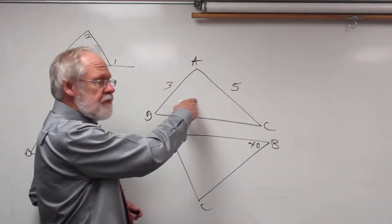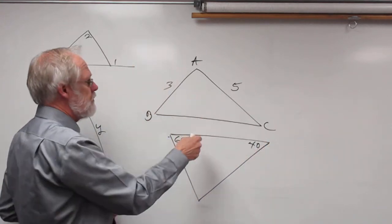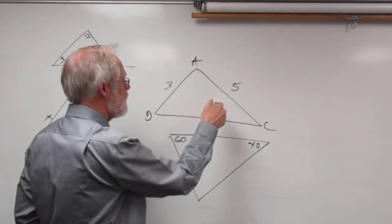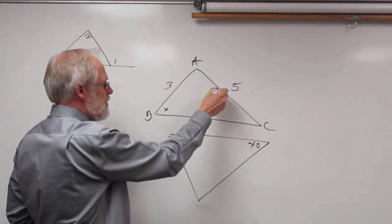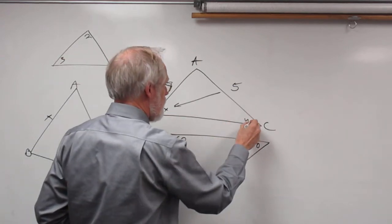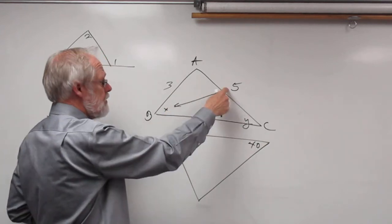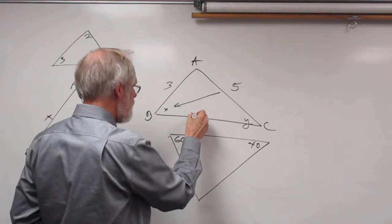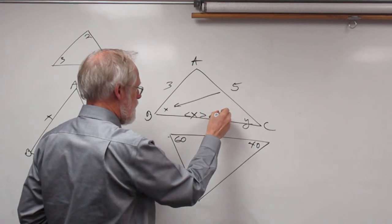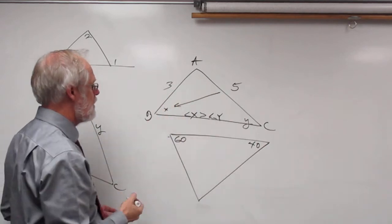For example, if you have triangle ABC with a side length of 3 and a side length of 5, the angle opposite the larger side is the larger angle. So if I label this angle Y, this angle here is going to be greater than angle Y because side AC is greater than side AB. So angle X is greater than angle Y because AC is greater than AB.